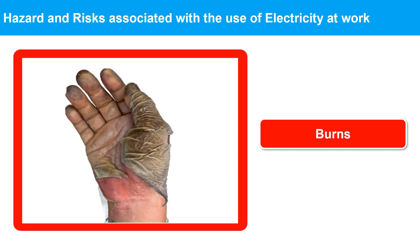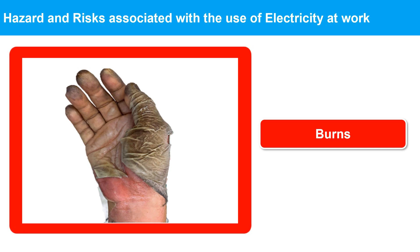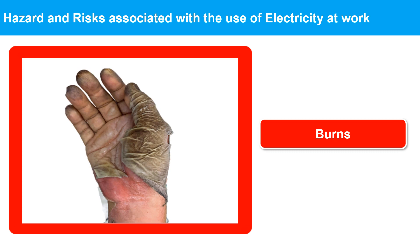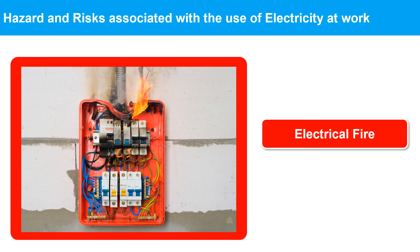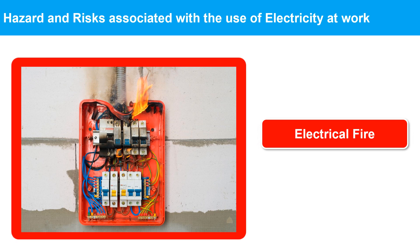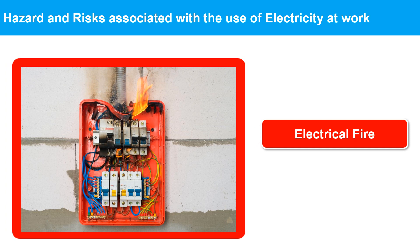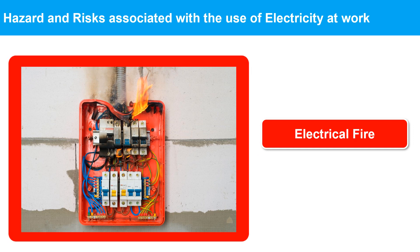Burns can also result from an electric shock, at the point of contact and at the point where the current flows out of the body. There may also be internal burns along the current path. Electrical fires can occur due to faulty wiring or improper use of electrical equipment, and these fires can be particularly dangerous because they can spread quickly and are difficult to extinguish.